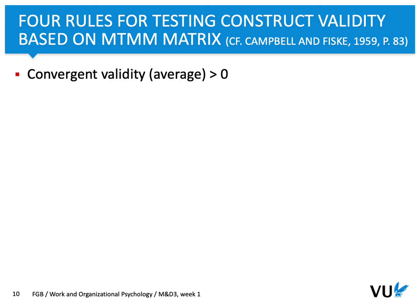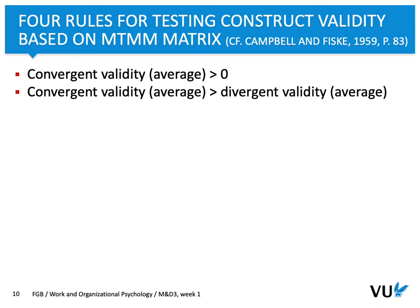There are specific rules to assess construct validity using the MTMM approach. First, for high construct validity, the convergent validity correlations — same traits across different methods — should on average be higher than zero. Second, convergent validity should be higher than divergent validity. That makes sense because correlations between the same traits should be higher than correlations between different traits across different methods.